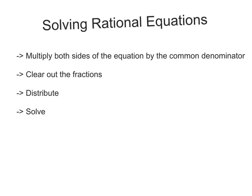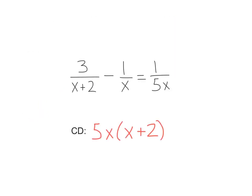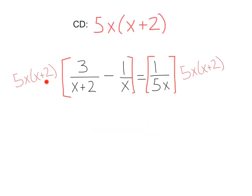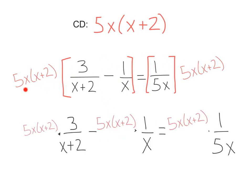And we're going to use that same method to solve rational equations. First, multiply both sides of the equation by the common denominator, clear out those fractions, distribute and solve. Let's get into it. 3 over x plus 2 minus 1 over x equals 1 over 5x. First, find the common denominator. In this case, it's going to be 5x times x plus 2. Let's go ahead and take that and multiply it to each side of the equation.